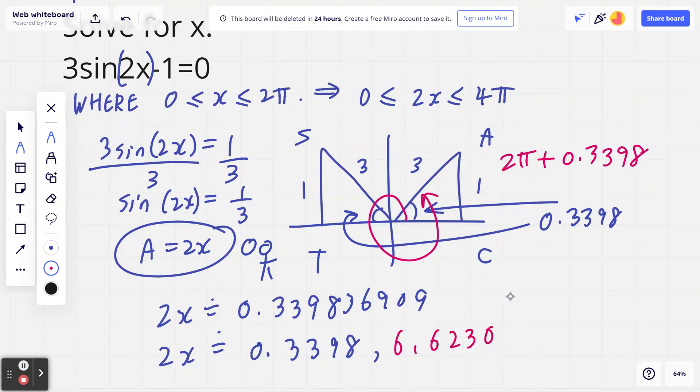I'm just rounding it to four decimals. Now, don't forget, there's the second principal angle right there, which is going to be π minus the original related acute angle, 0.3398. So in this case, if I take π minus 0.3398, that's going to be approximately 2.8018.